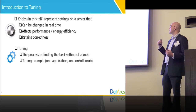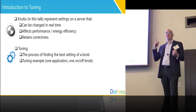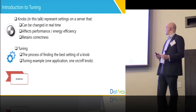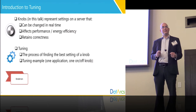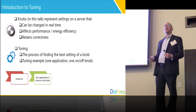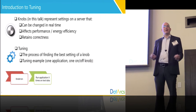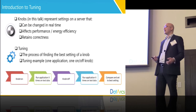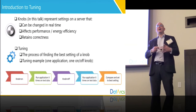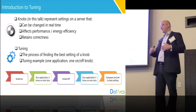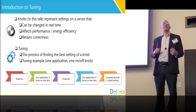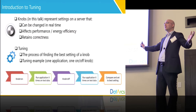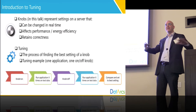Let's look at an example with one binary knob and one application — manual tuning. Switch the knob on, run the application several times, record the run times, then switch the knob off, run the application several times, and now that we have all of the results, we can do some statistics and tell which setting is better, and then set that knob to that particular setting. This is manual tuning at the very basic level.